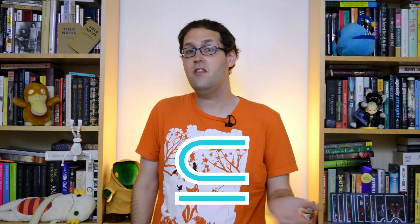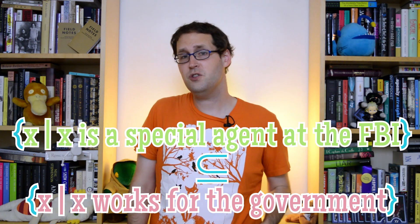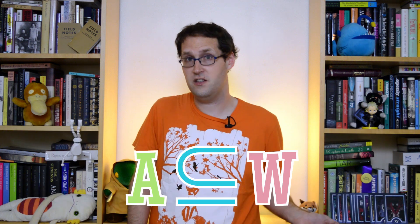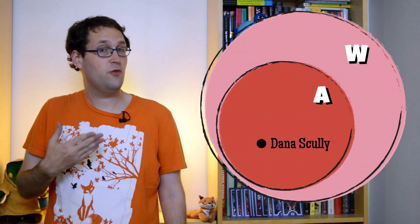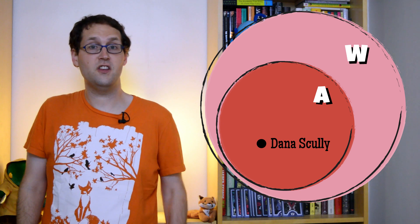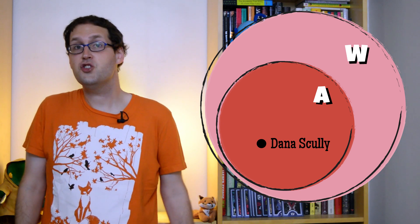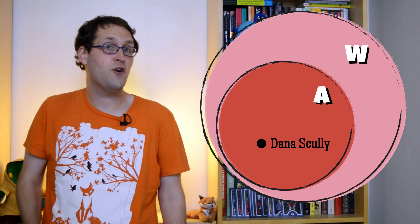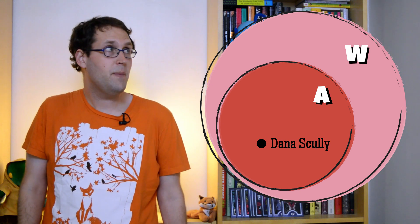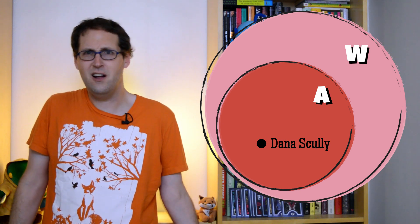We say that one set is a subset of another just so long as everything in the first one is also in the second, and we write this relationship out as a kind of turned U. So if the set of special agents at the FBI is a subset of all the people who work in the government, we get this. We can even draw a picture: the circle standing in for the special agents is totally inside the circle for every government worker. That bigger set includes special agents, but also diplomats and postal workers and everyone else.